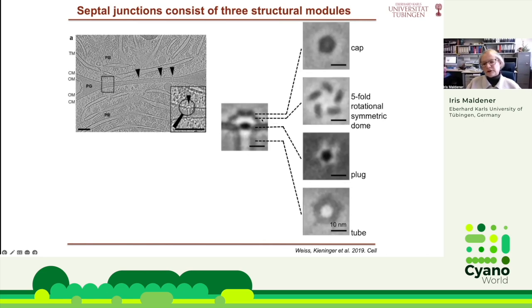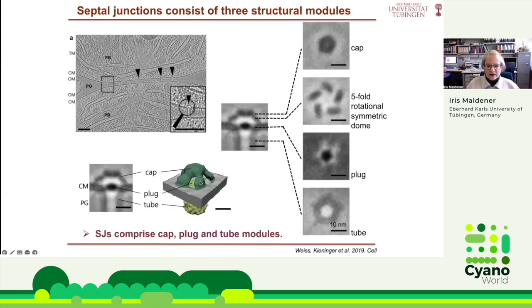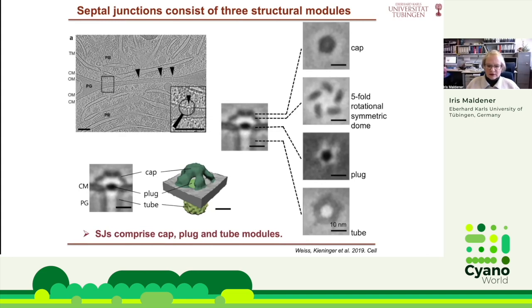Continuing down in cross-section through the membrane, you can see a plug sitting in the membrane. Below that is what we finally called the tube component, which has an average inner diameter of approximately seven nanometers. The whole thing goes through the nanopores. A model shows the cap in green continuing down with a plug, then a tube reaching to the other side of the septum, ending with the same structure in the neighboring cell. This is a symmetric structure. We speculated that this structure could make a conformational change to regulate cell-cell communication and molecule transfer — perhaps it can close or reduce the transfer.